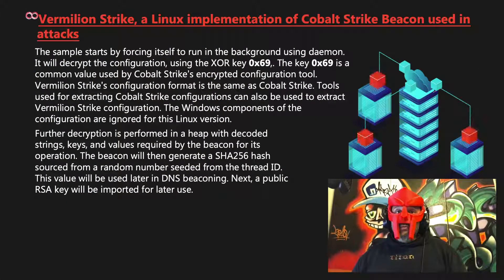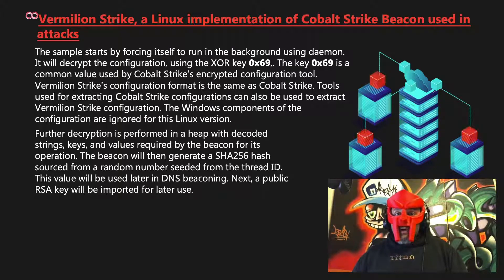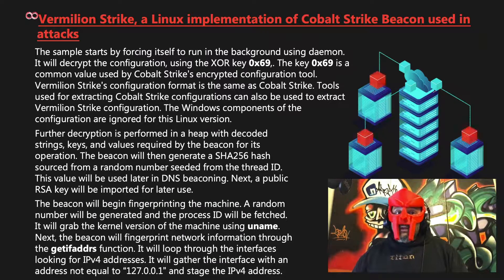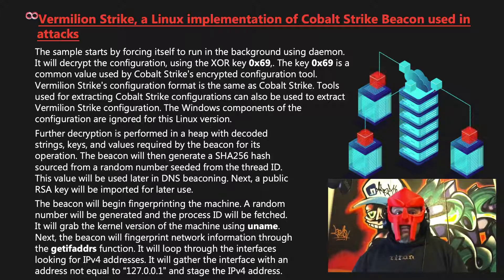Further decryption is performed in a heap with decoded strings, keys, and values required by the beacon for its operation. The beacon will then generate a SHA-256 hash sourced from a random number seeded from the thread ID. This value will be used later in DNS beaconing. Next, a public RSA key will be imported for later use. The beacon will begin fingerprinting the machine: a random number will be generated, the process ID will be fetched, and it will grab the kernel version using uname. The beacon will then fingerprint network information through the getifaddrs function.